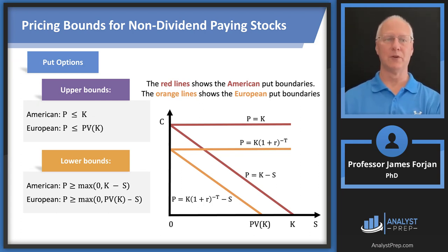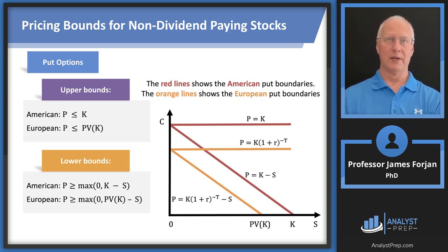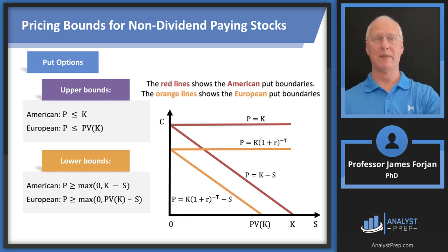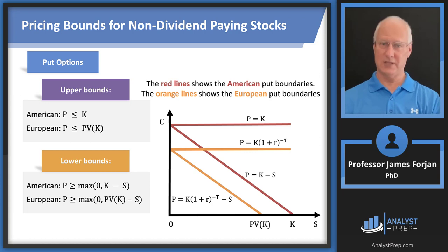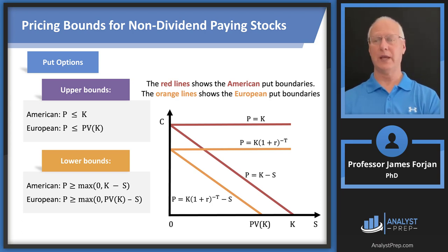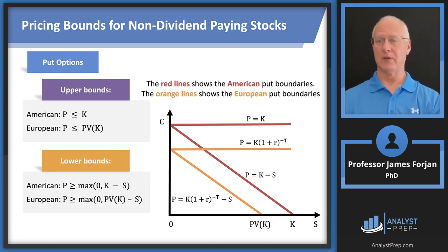Switching to put options: upper and lower bounds. For American put options (shown in red), the upper bound is the exercise price — there's no way you'd pay $120 for a put when the best you could do is make $100 (if the stock falls to zero). The lower bound is the difference between the exercise price and the stock price as it falls. For European options, we take present values using (1 + r) to the negative T.